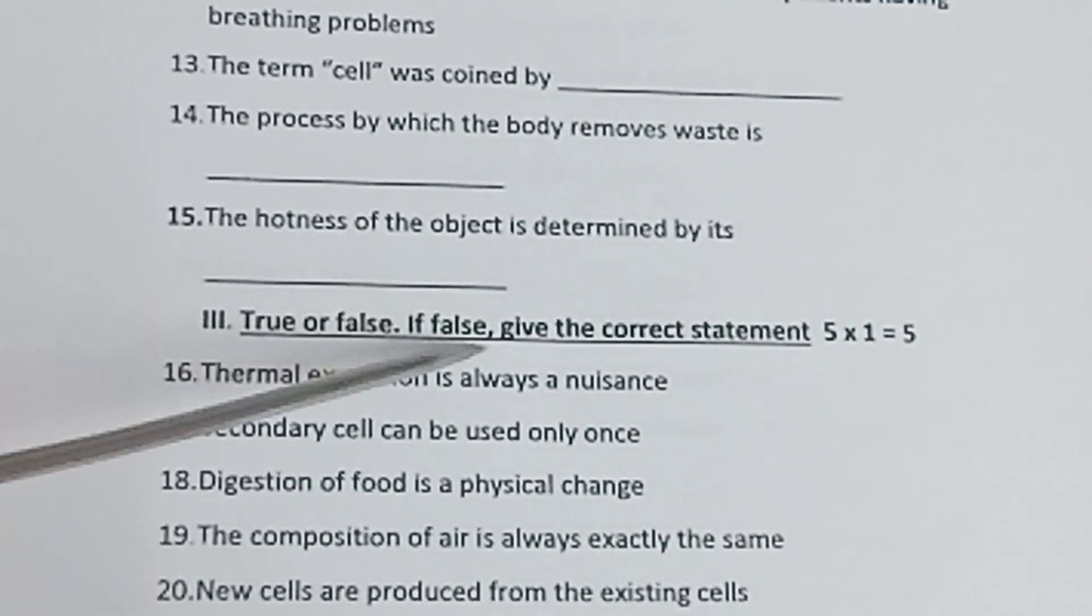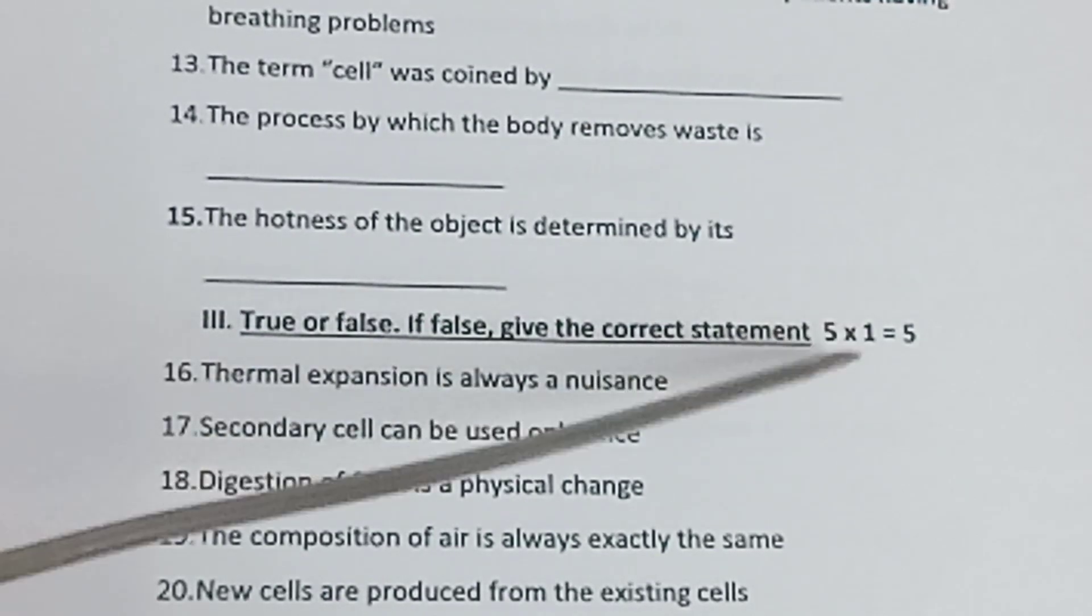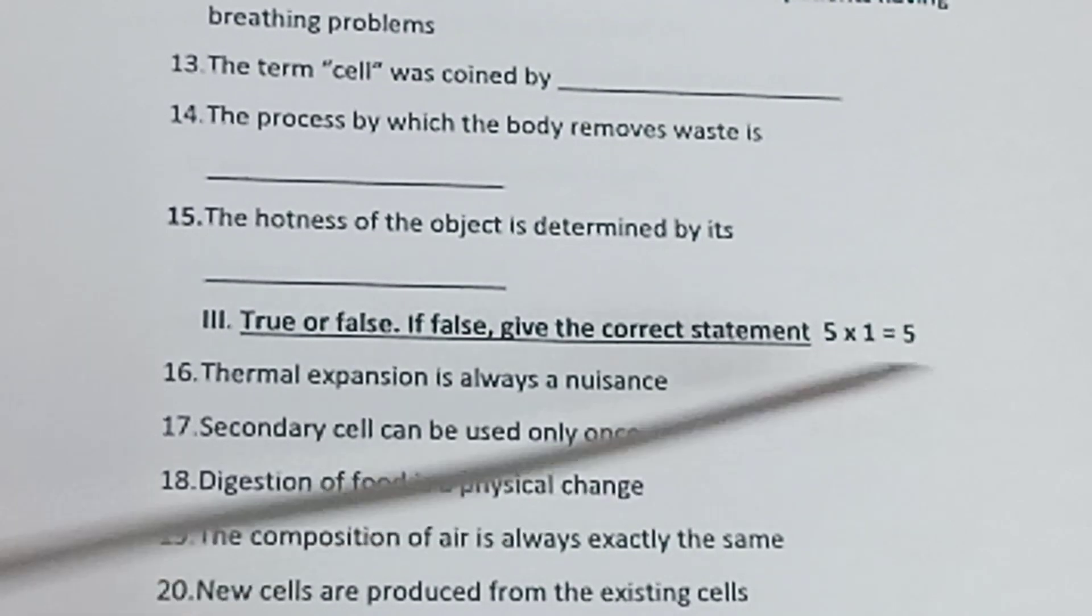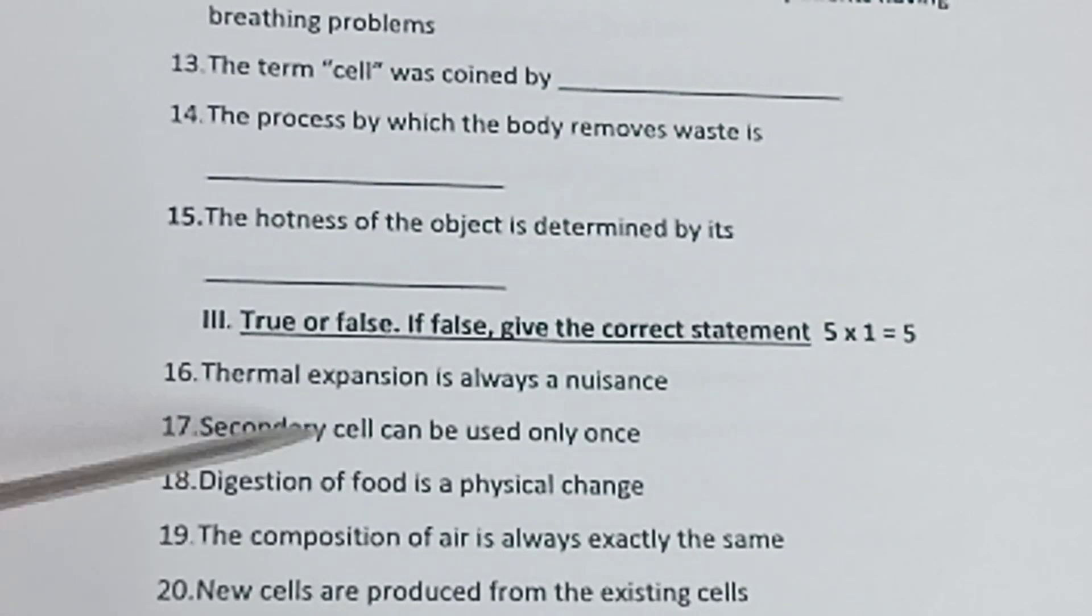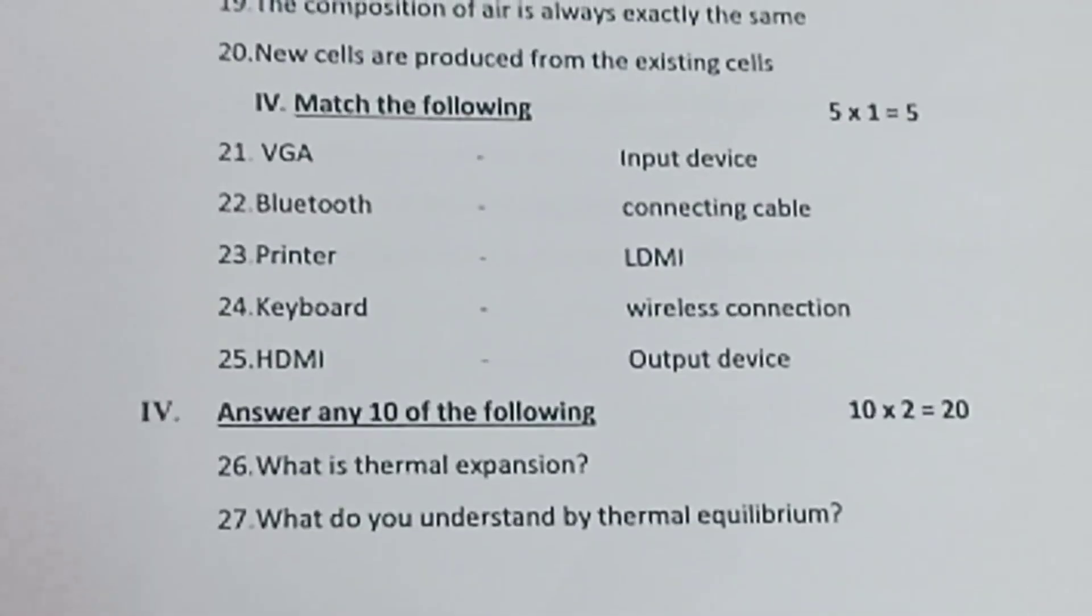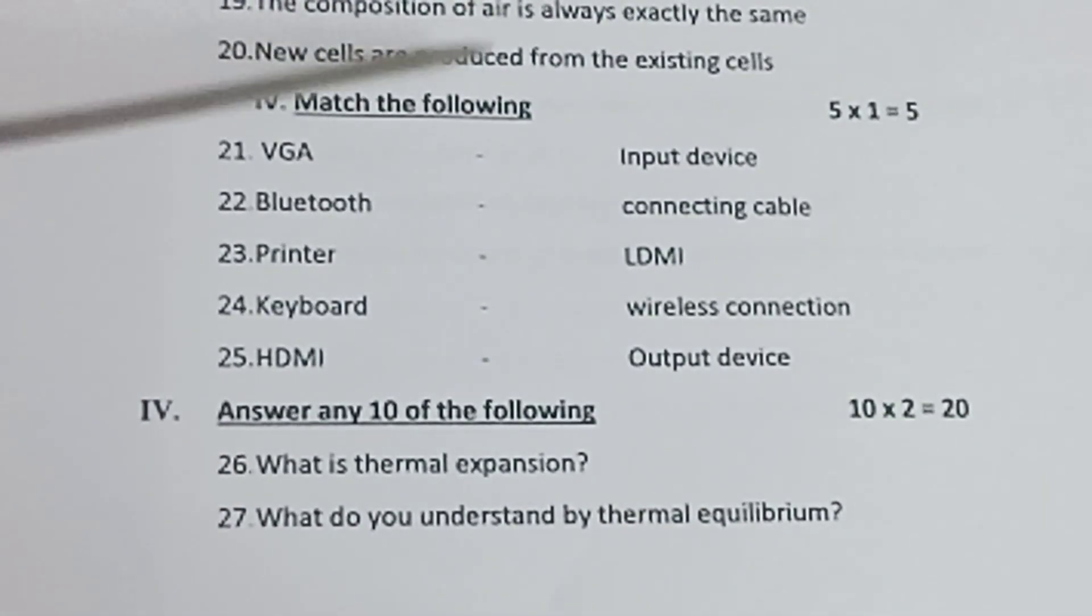Section 3: True or false, if false give the correct statement. 5 into 1 is equal to 5. Question 16: Thermal expansion is always a nuisance. Question 17: Secondary cell can be used only once. Question 18: Digestion of food is a physical change. Question 19: The composition of air is always exactly the same. Question 20: New cells are produced from the existing cell.